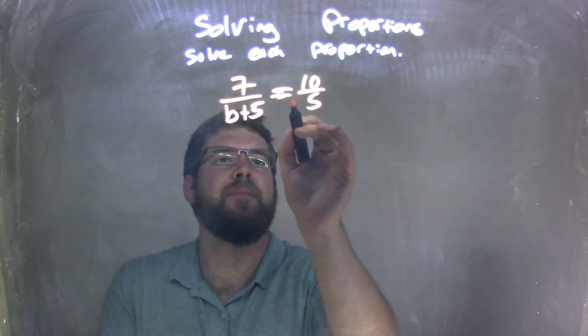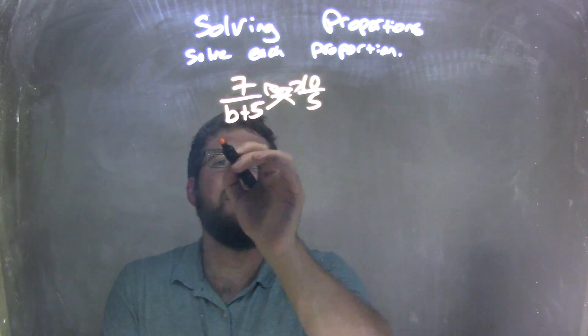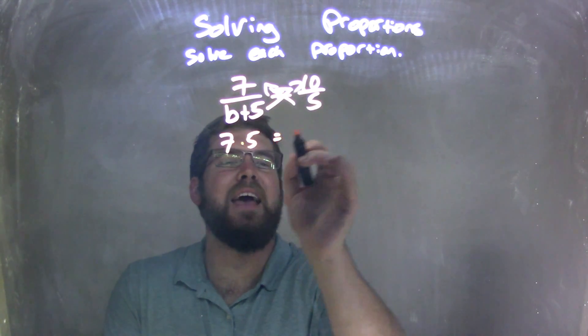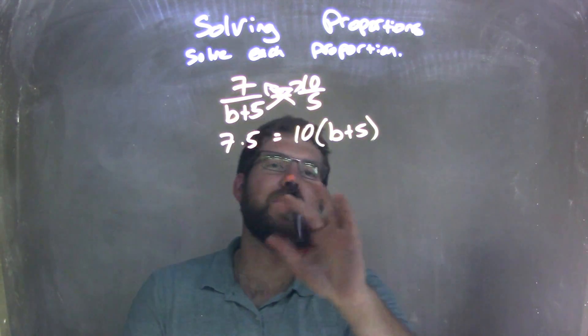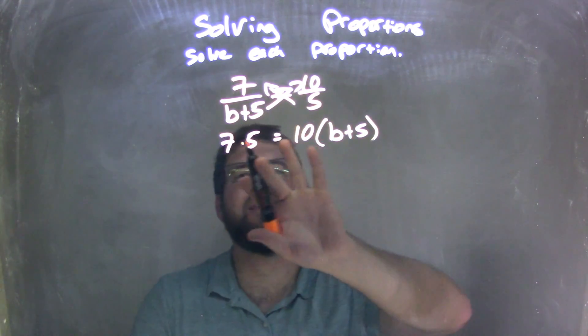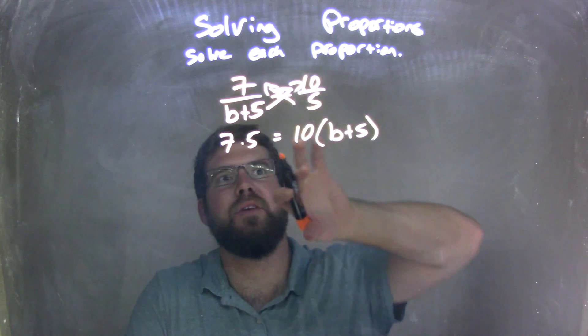I need to cross-multiply here. 7 times 5 on the left, and 10 times b plus 5. Multiplication really doesn't matter which one comes first. I like to have the more complicated part on the right.